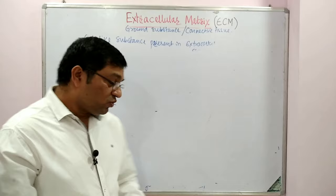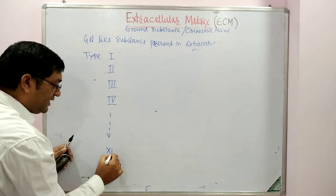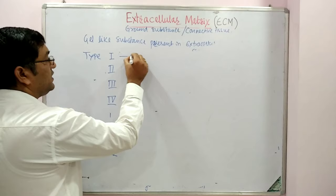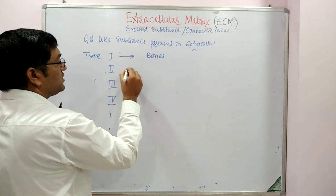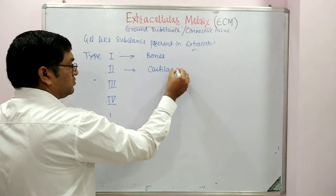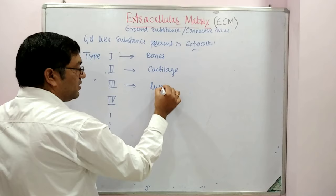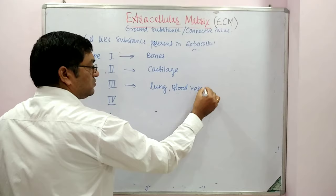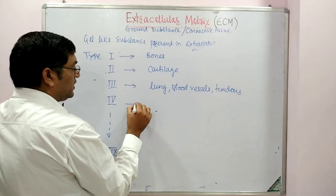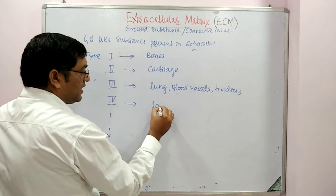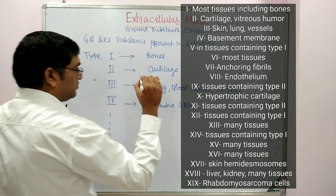Type I collagen is present mainly in bones. Type II is in cartilage. Type III is present in elastic tissues, for example lung, blood vessels, and tendons. Type IV is present in the glomerular basement membrane, specifically in the lamina of the glomerular basement membrane.